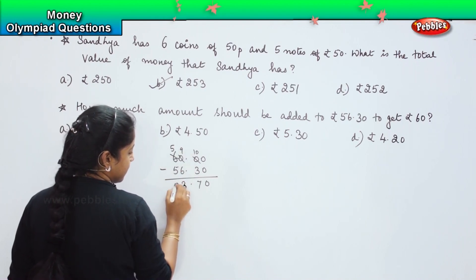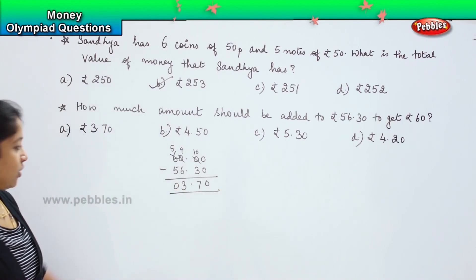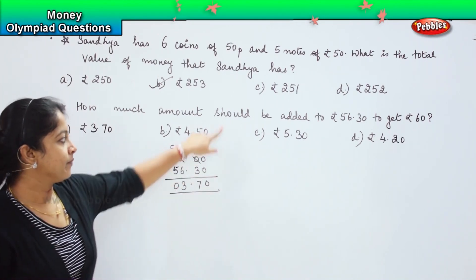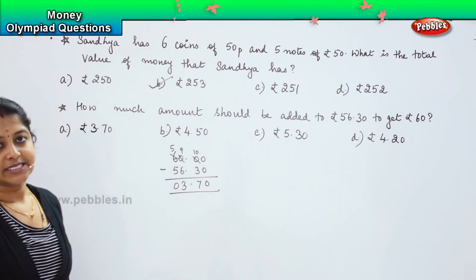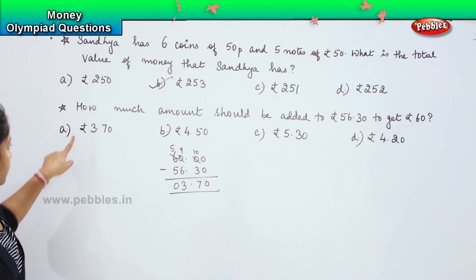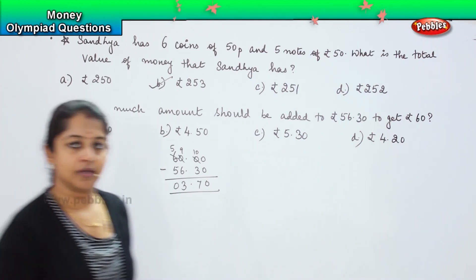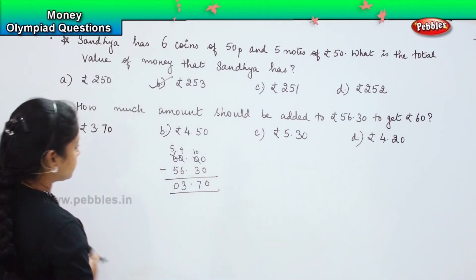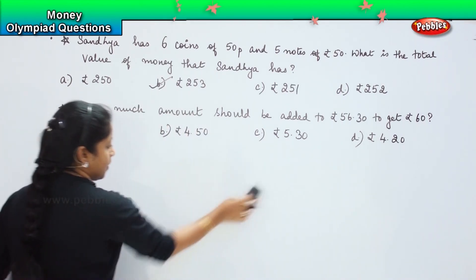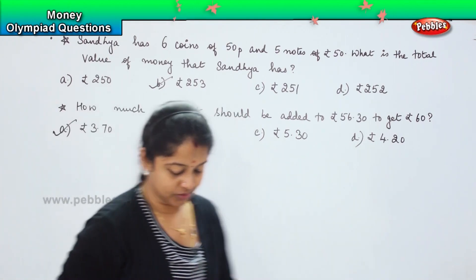So I need 3 rupees and 70 paise extra in order to make it 60 rupees. So where is it? This is option A. Clear, children? Shall we proceed with the next sum? Here is your next question.